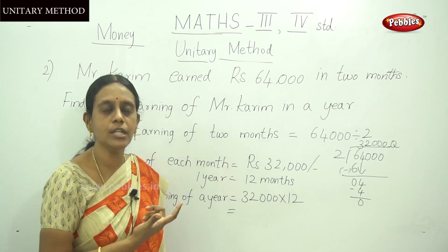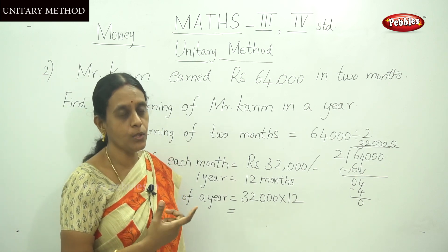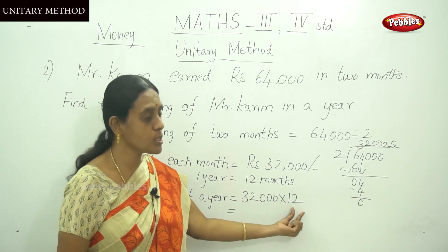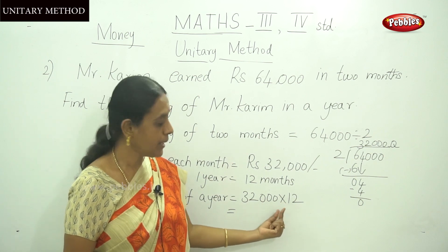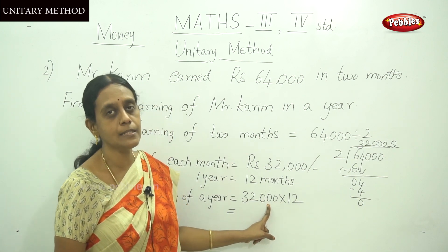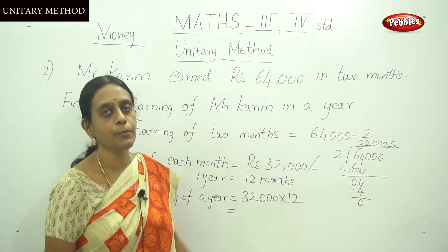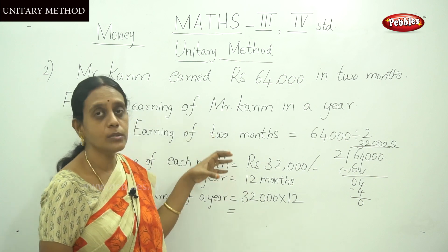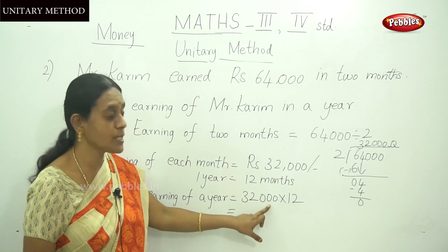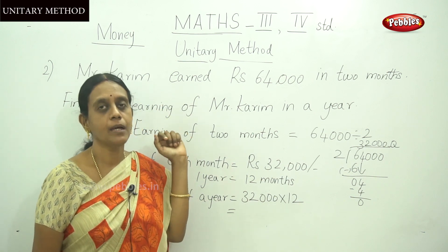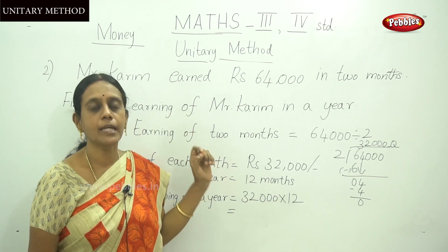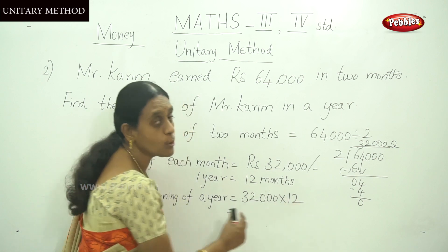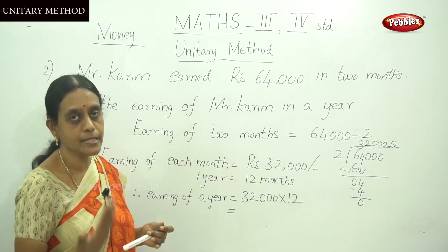We learned in the multiplication video how to multiply zero-ending numbers. Simply multiply 32 by 12 and then put the three zeros to the right side of the product. This technique makes it very easy to multiply large numbers. So multiply 32 into 12 and append the zeros.